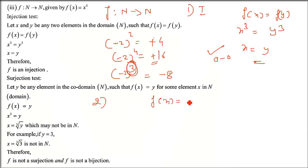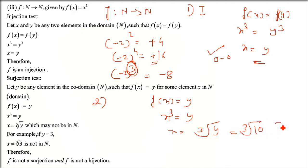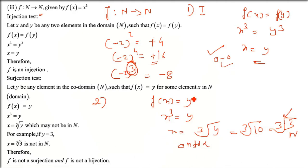Checking surjection for f(x) = x³ from ℕ to ℕ: setting x³ = y gives x = ∛y. For example, the cube root of 10 is not a natural number. Natural numbers are just counting numbers 1, 2, 3. So it is not surjective. It was one-to-one but not surjective, therefore not bijective.